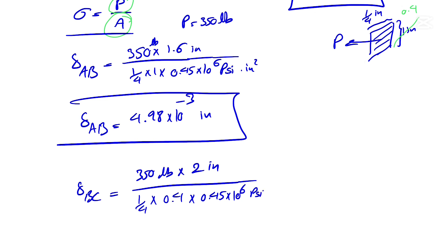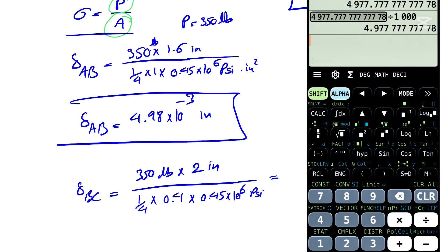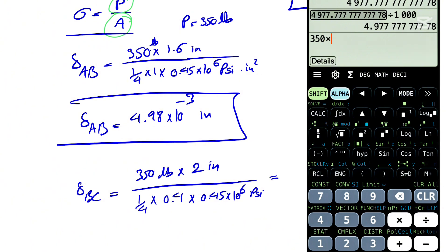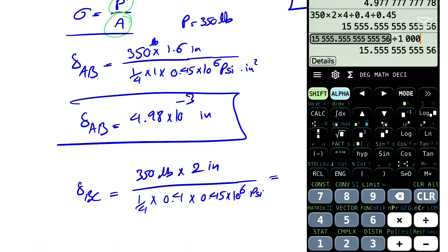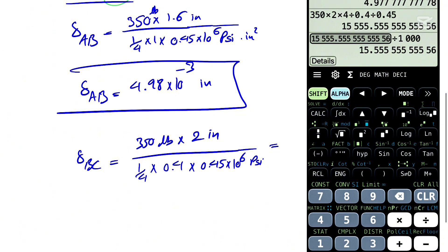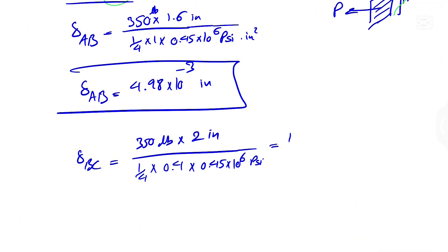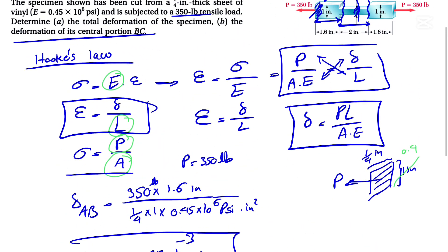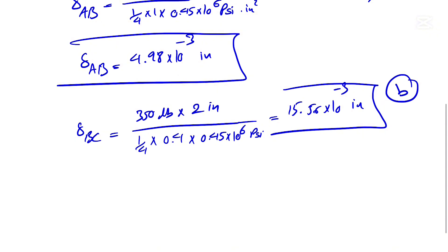So let's see what we get for this part. 350 times 2 times 4 divided by 0.4 divided by 0.45, and we're going to divide this by 1000. Keep in mind that we have a 10 to the minus. So that would be 15.56 times 10 to the minus 3 inches. That's actually the answer for the B part of the question. So that was the answer for the B part.